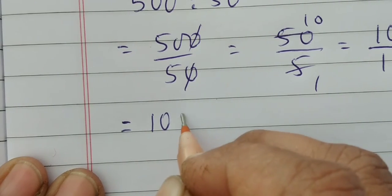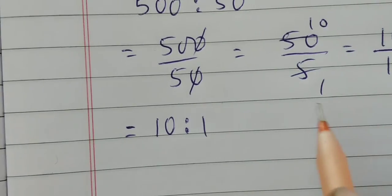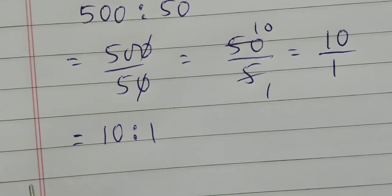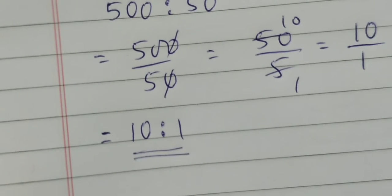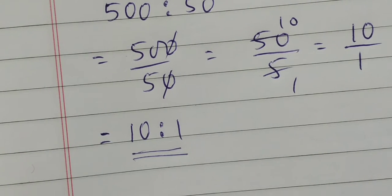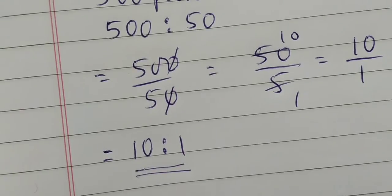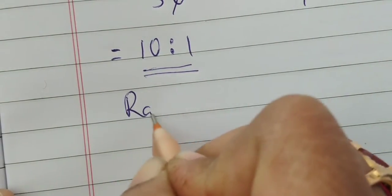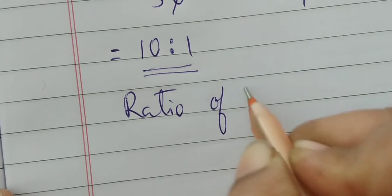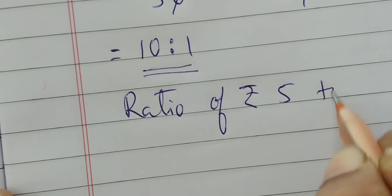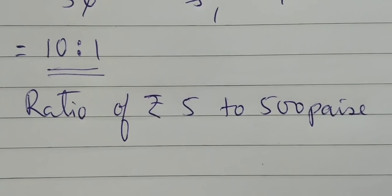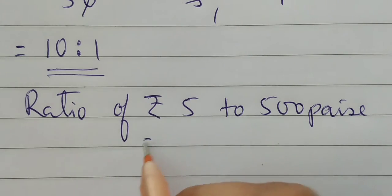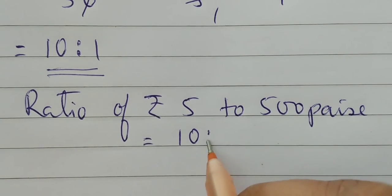Zeros gone, 50 upon 5. 5 ones are 5, 5 twos are 10. That's equal to 10 upon 1 in ratio form, which is 10 is to 1. When you are asked to write the ratio, you have to express it in the form like this: 10 is to 1. So the ratio of rupees 5 to 50 paise is equal to 10 is to 1.